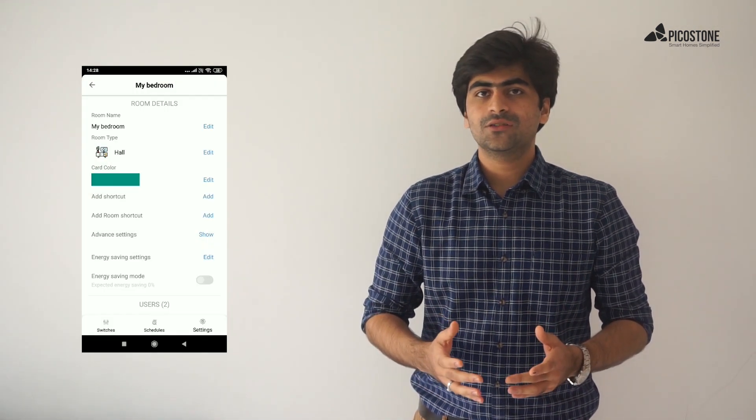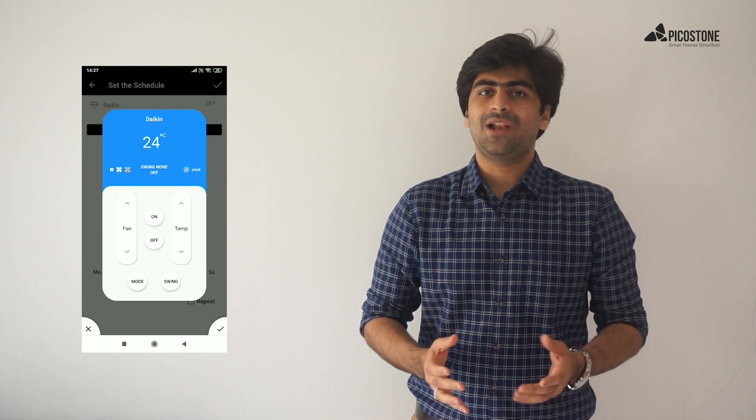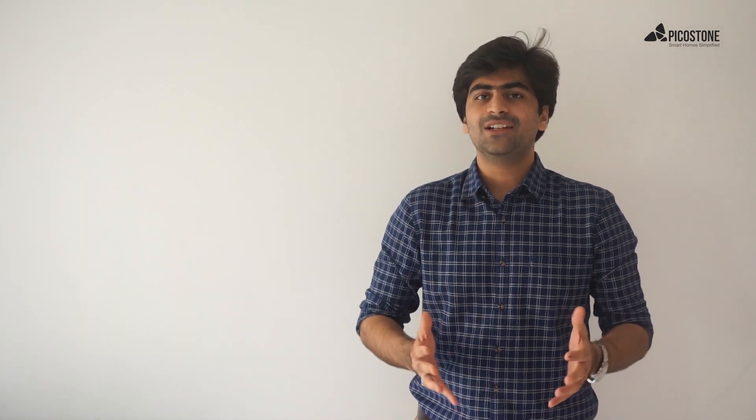Congratulations, your home is now a smart home. Other than just controlling your appliances, there are a lot of other features you can use. You can save energy using the cycling feature, schedule your appliances, and even voice control your ACs just by saying, Alexa, turn on the AC.